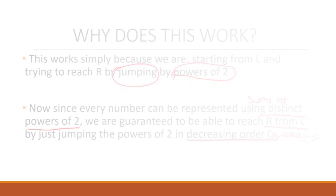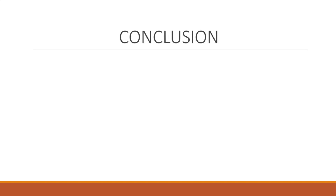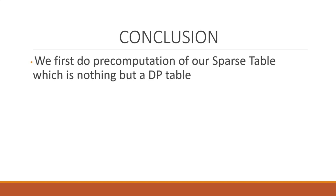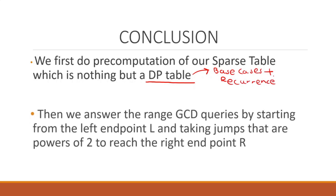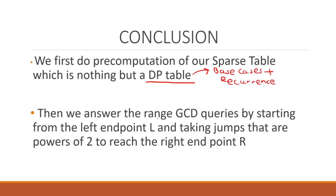To conclude: first we precomputed our sparse table, which is a DP table — we identified base cases and looked at the recurrence. Second, we used this sparse table to answer range GCD queries by starting from left endpoint l, taking jumps which are powers of 2, and finally reaching right endpoint r. This is all there is to sparse table.